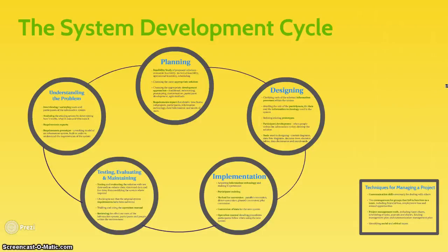As part of the project management course, the fundamental concept is the system development cycle, which is the ideology behind how we come to develop a solution in information processes and technology. It consists of five stages, each symbolizing different parts of project management.